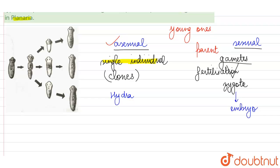Budding is most commonly seen in hydra, but also in other smaller organisms like fungi. A little outgrowth appears on the parent's body and remains attached to the parent for some time, after which it eventually detaches and grows into a new individual. Because only one hydra produces this offspring, it is an asexual process.